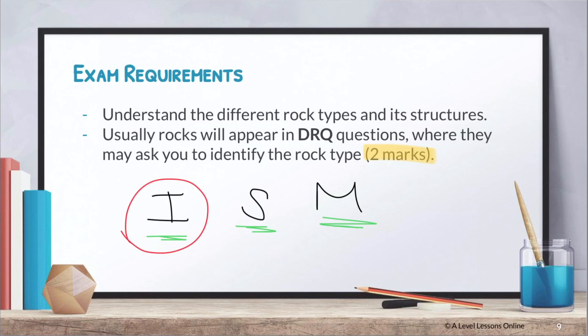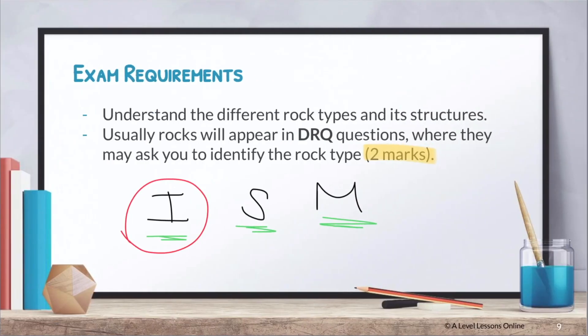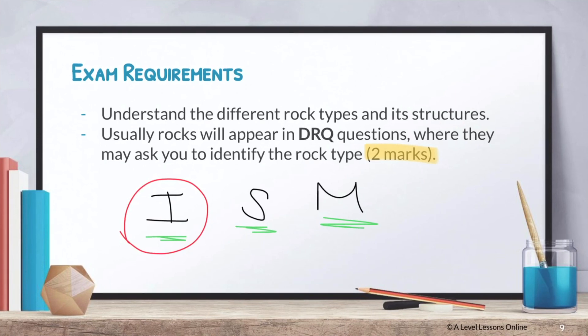Rocks questions are rarely seen in exams, and if they do appear, they'll be a very small proportion. The majority of this section focuses on physical weathering, chemical weathering, karst landscape, and aeolian landscape, which will be covered in upcoming videos. Be sure to subscribe to stay updated on the next videos, which will cover physical and chemical weathering first, followed by karst and aeolian landscapes to complete the physical geography syllabus.